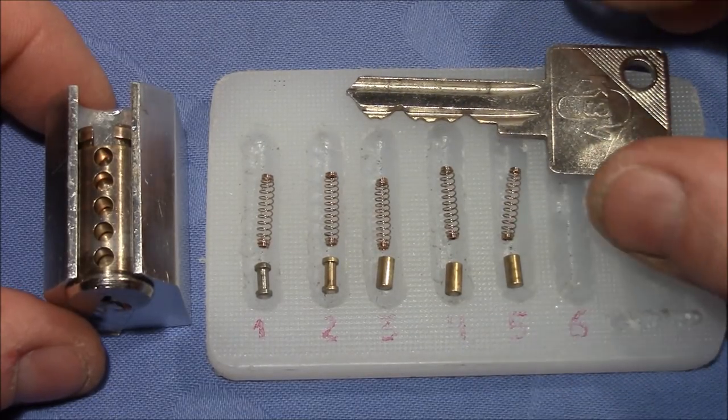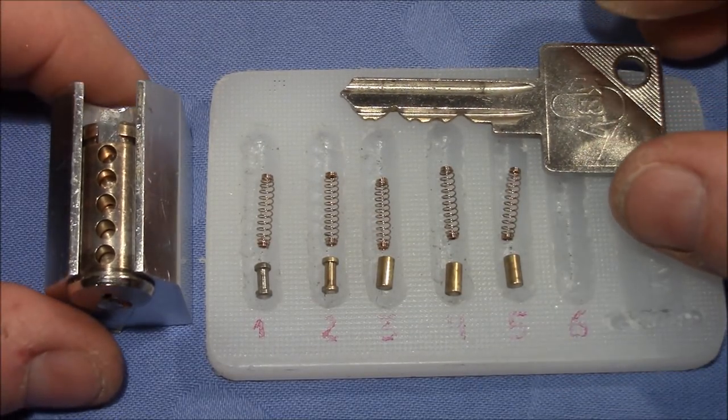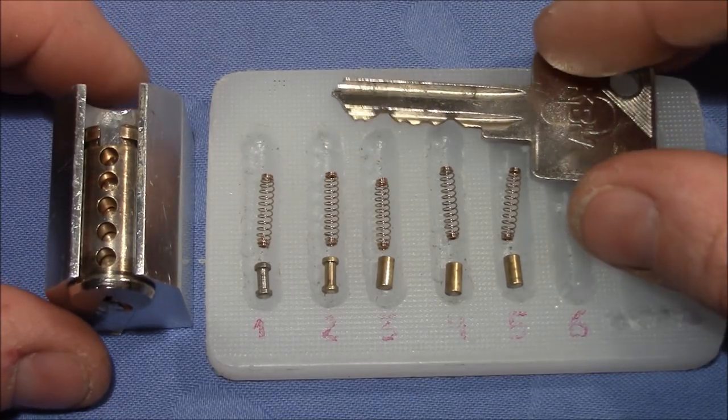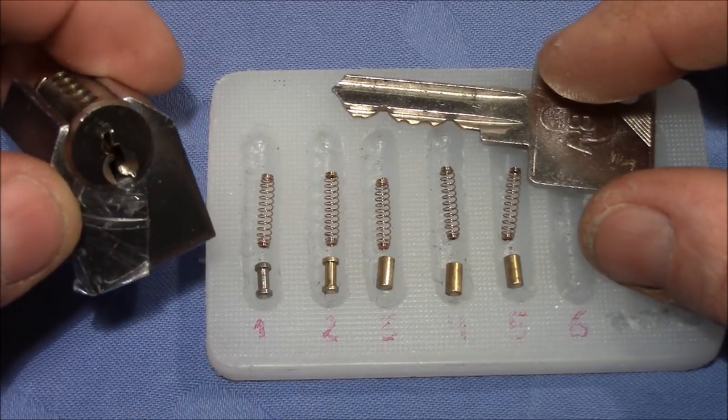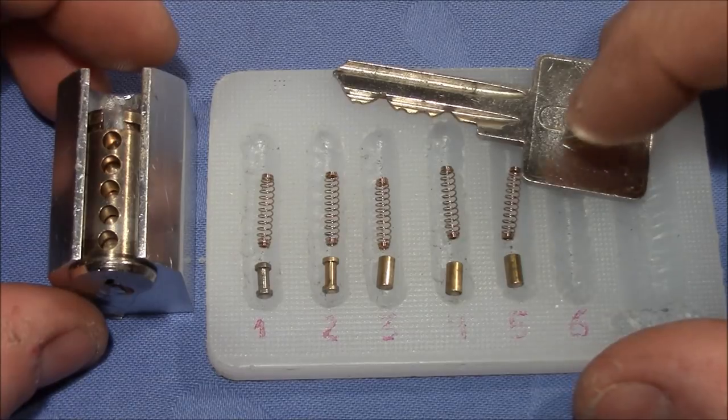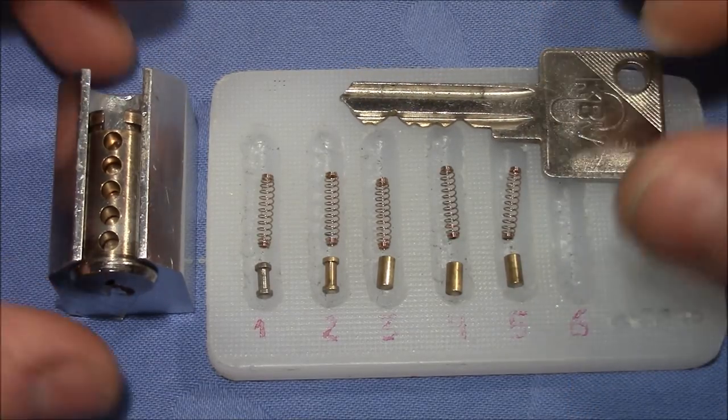What makes a lock difficult to pick? That's of course the choice of security pins but also tight tolerances and a reasonable bitting in combination with a paracentric keyway. I don't think that this lock has tight tolerances and I will show you later on what I mean.